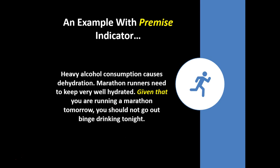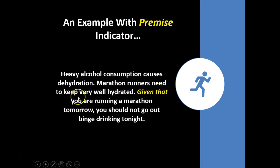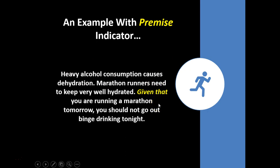Here's that same example but with a premise indicator. Heavy alcohol consumption causes dehydration. Instead of a conclusion indicator, you've got 'given that' — a premise indicator. That tells you you're dealing with some premises in this area. The conclusion is still the same: you should not go out binge drinking tonight. Again, these indicator words and phrases are not always present, but when they are, they're very helpful in unpacking the argument.